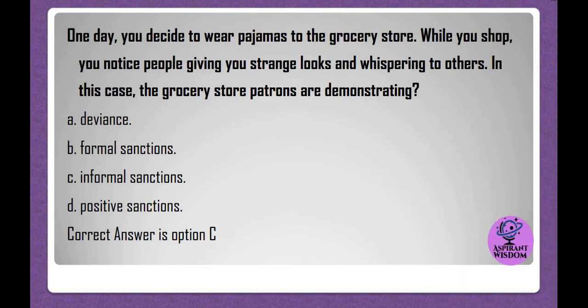One day, you decide to wear pajamas to the grocery store. While you shop, you notice people giving you strange looks and whispering to others. In this case, the grocery store patrons are demonstrating: A. Deviance. B. Formal sanctions. C. Informal sanctions. D. Positive sanctions. Correct answer is option C.